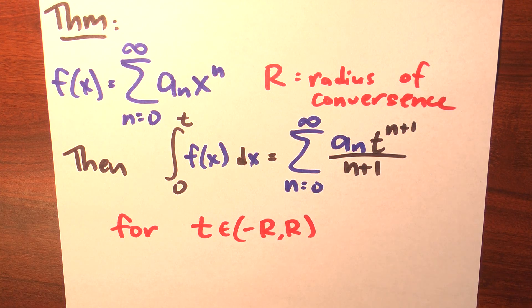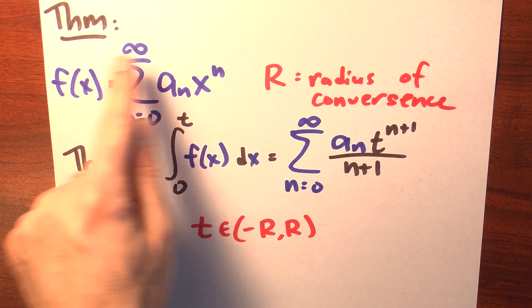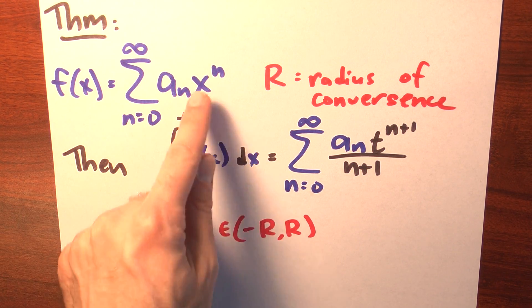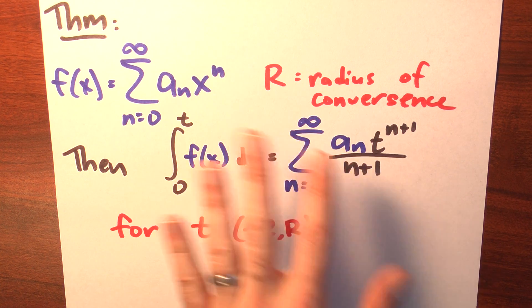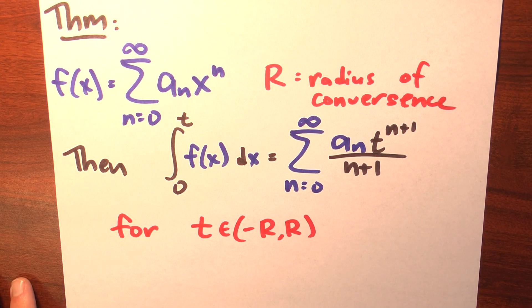We've already seen how we can differentiate term by term. Well, can we integrate term by term? Yes, and here's a theorem. Suppose we have some function f, and f of x is this power series — the sum as n goes from 0 to infinity of a sub n times x to the n — and big R is the radius of convergence of this power series.